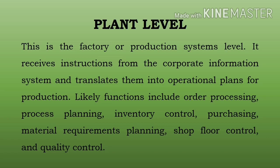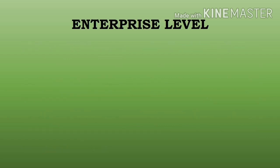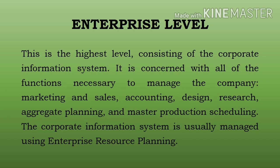Purchasing mein samaan ki khareed karte hain — jaise raw material, tools, equipment. Material requirement planning (MRP) production planning, scheduling aur inventory control system ka upyog karke manufacturing process ko manage karta hai. Shop floor control — jahan par machinery rahti hai, actual kaam hota hai us floor par control karte hain. Quality control — jo bhi product ya parts ban rahe hain, unki quality kaisi hai, yeh dekhte hain.